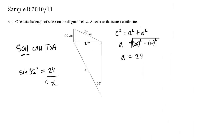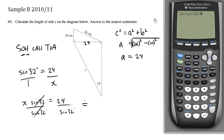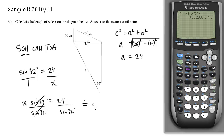We can cross multiply: x times sine 32 degrees equals 24. Then we divide both sides by sine 32 to solve for x. Using our calculator, x equals approximately 24 divided by sine 32 degrees — not radians — which is approximately 45.3.